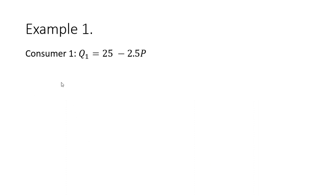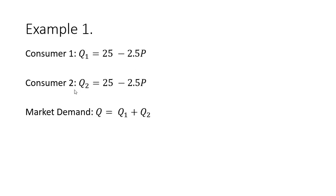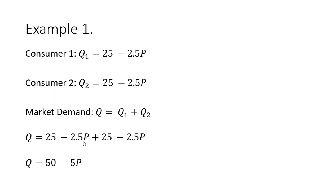In example one, we have two consumers. Consumer one's demand for the good looks like this, and consumer two's demand looks like this. They both have the exact same demands for the product. In this case, calculating market demand is straightforward — it's just the sum of consumer one and consumer two's demand. Market demand is given by q₁ plus q₂. Adding up both demand equations and simplifying, the market demand is 50 minus 5p.